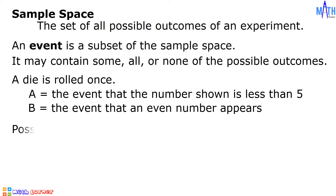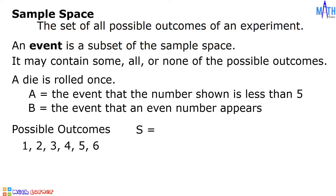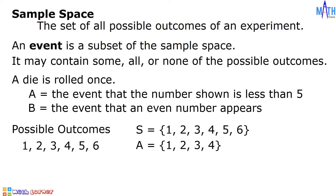The possible outcomes are 1, 2, 3, 4, 5, and 6. The sample space S consists of the elements 1, 2, 3, 4, 5, and 6. Since A is the event that the number shown is less than 5, event A consists of the elements 1, 2, 3, and 4. Since B is the event that an even number appears, event B consists of the elements 2, 4, and 6.